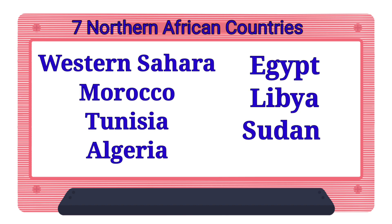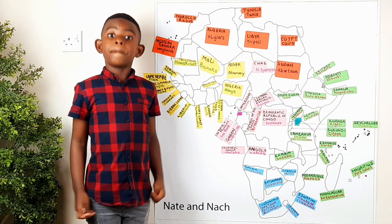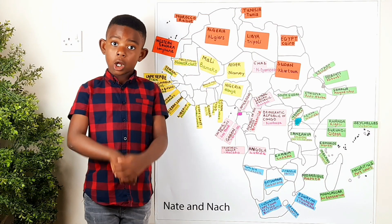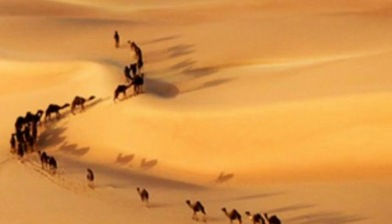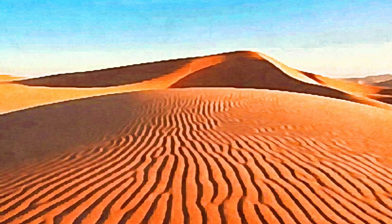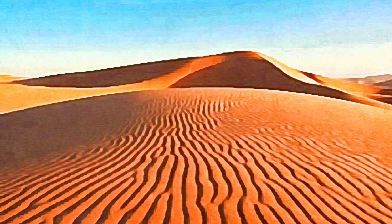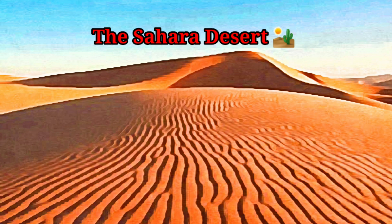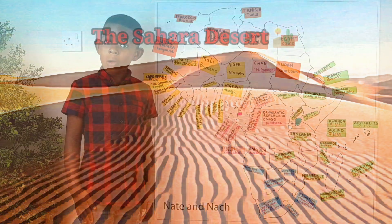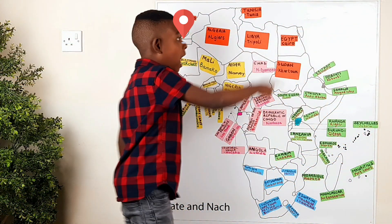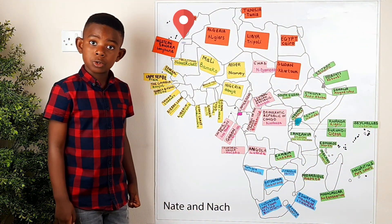In Northern Africa we have got seven countries and most of those countries are covered with loads and loads of deserts. The largest desert in Northern Africa is called the Sahara Desert and the Sahara Desert reaches out to lots of other countries.